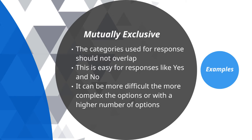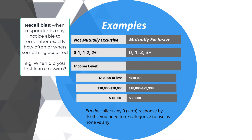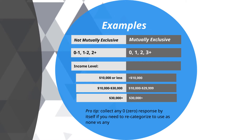Let's look at some examples. On the left you can see examples of categories that are not mutually exclusive, with comparable mutually exclusive categories on the right. For a question about how frequently you've done something, the categories on the left show 0 to 1, 1 to 2, and 2 plus. The problem is that if someone has done something one or two times, they don't know which category to select. On the right, the mutually exclusive options are 0, 1, 2, and 3 plus.